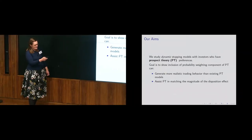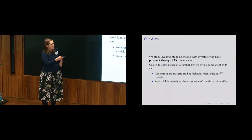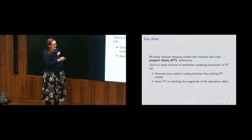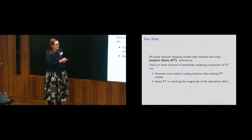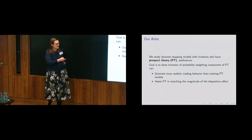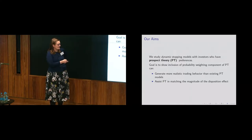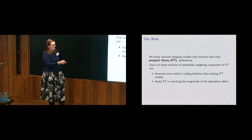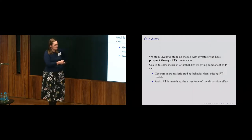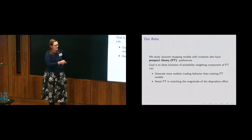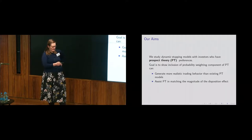What we want to do in this talk is think about optimal stopping models — dynamic optimal stopping models with investors that have prospect theory preferences — and show that including the probability-weighting component of prospect theory can give us more realistic behaviour than existing prospect theory models and expected utility models. In particular, we want to better match a feature called the disposition effect, and better match the size of this effect.